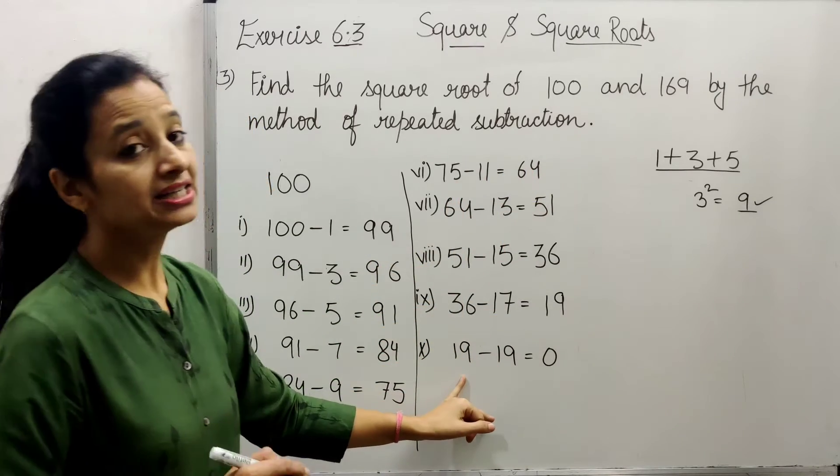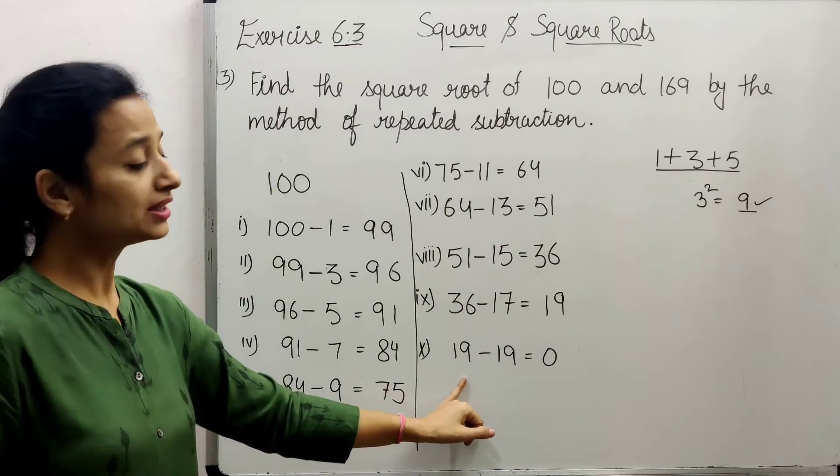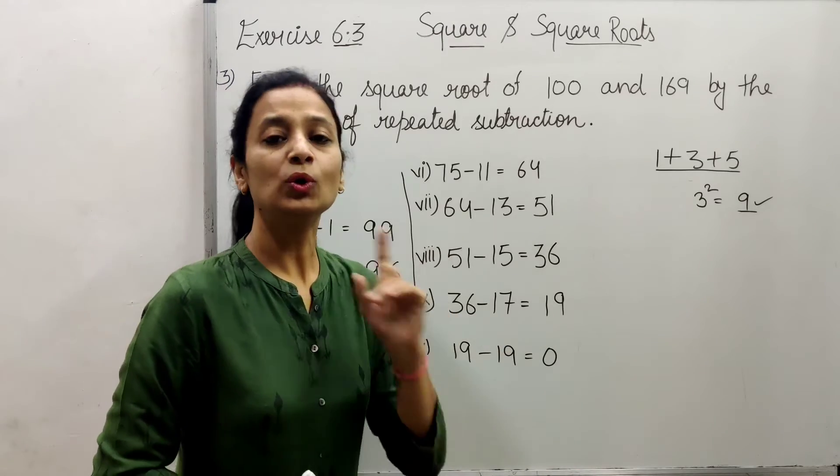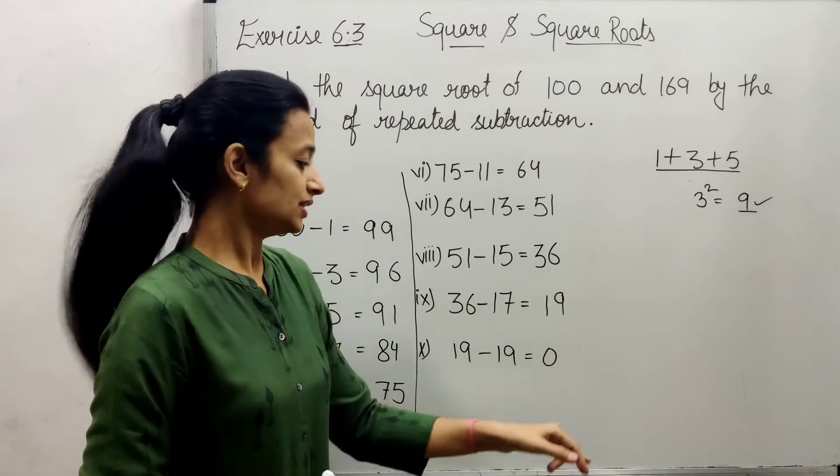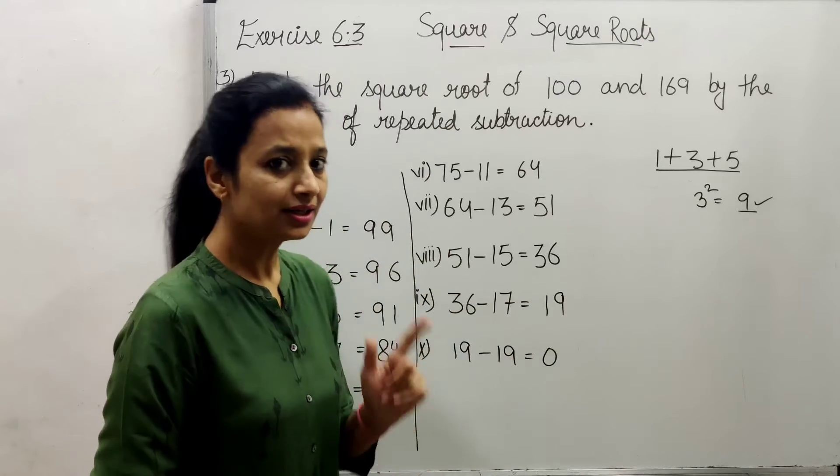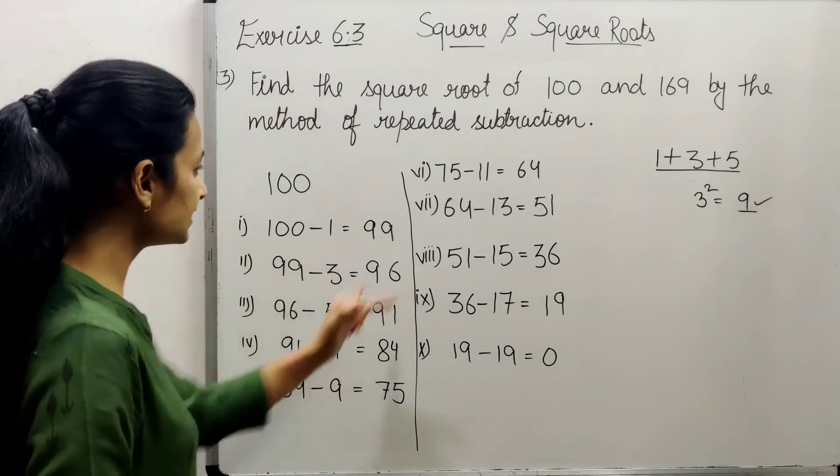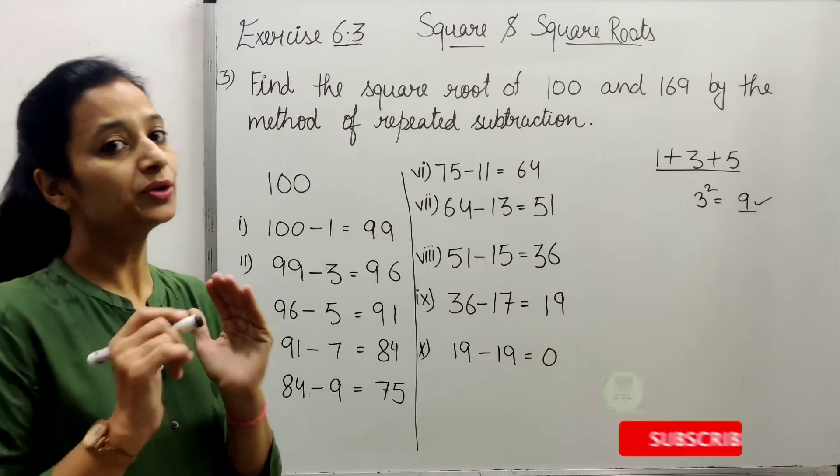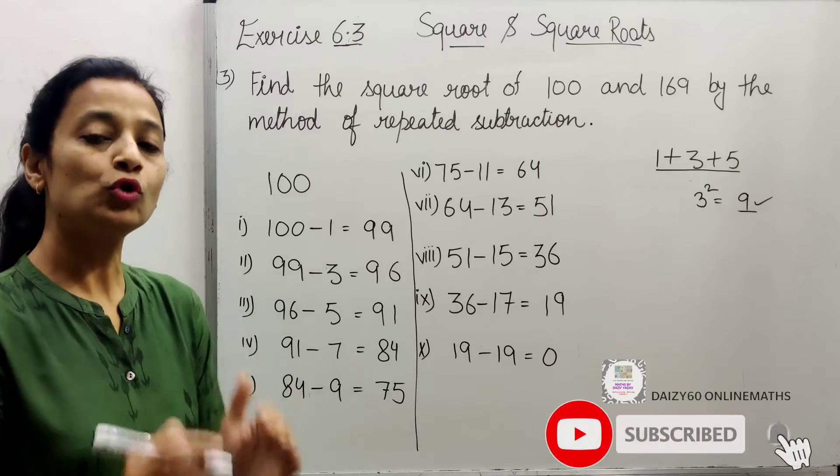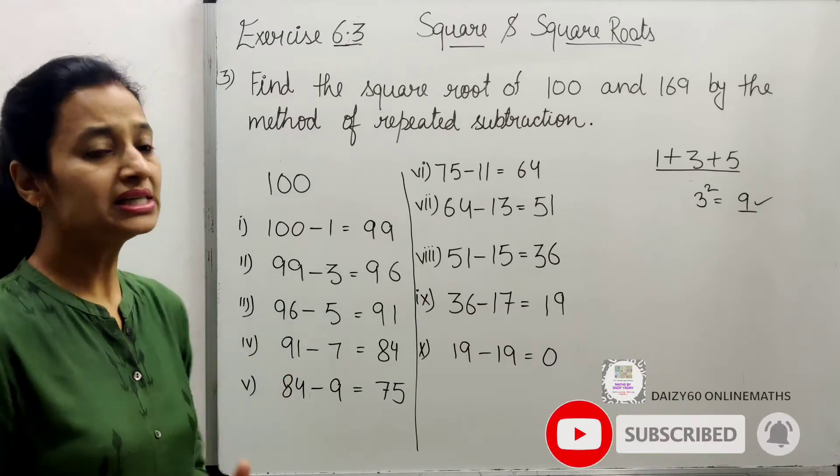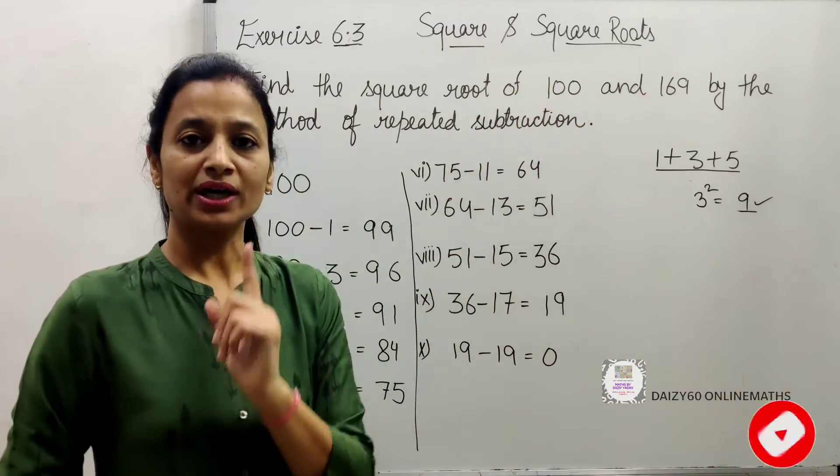And in the same way, until the end, we have to subtract until zero. When we reach zero, then however many steps it took to reach zero, that will be our answer - the square root of the given number.